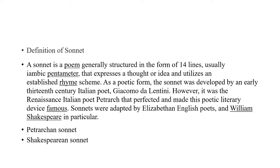A sonnet is a lyric poem consisting of a single stanza of 14 iambic pentameter lines, linked by an intricate rhyme scheme. There are two major patterns of rhyme in sonnets written in the English language. You can read on screen also. A sonnet is a poem generally structured in the form of 14 lines, usually iambic pentameter, that expresses a thought or idea.